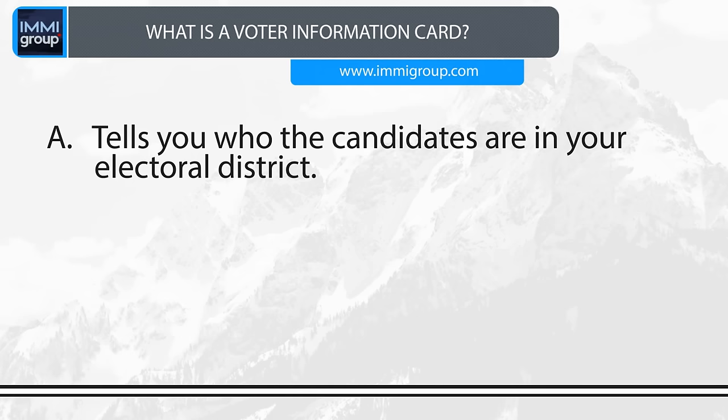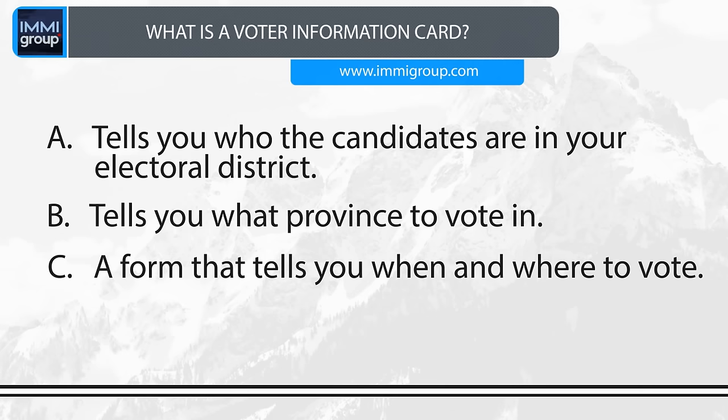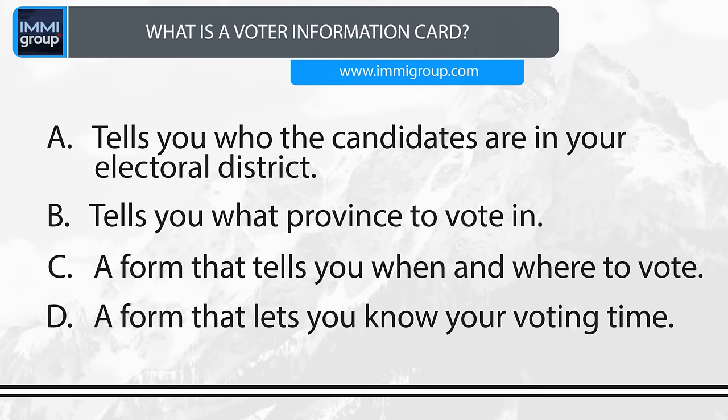What is a voter information card? A. Tells you who the candidates are in your electoral district. B. Tells you what province to vote in. C. A form that tells you when and where to vote. D. A form that lets you know your voting time. Answer: A form that tells you when and where to vote.